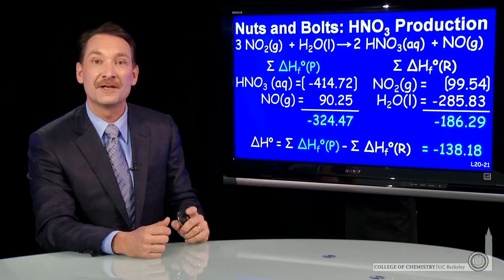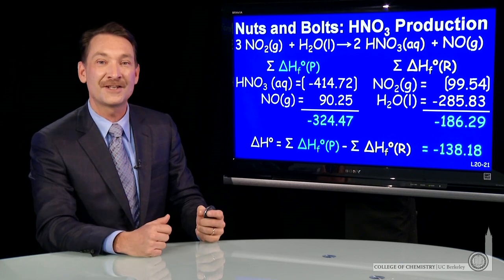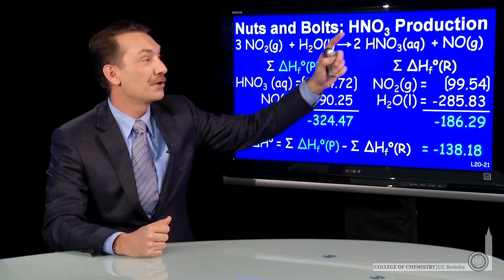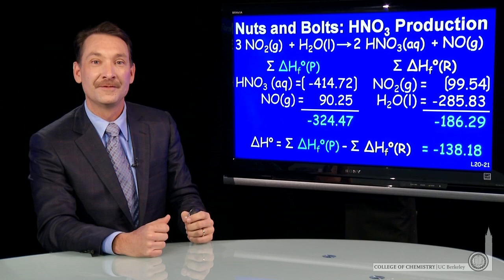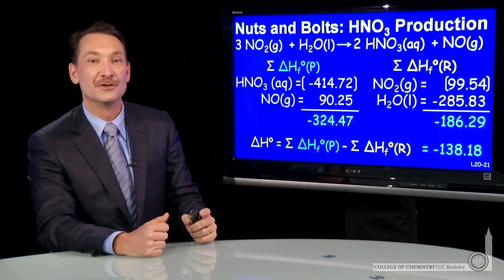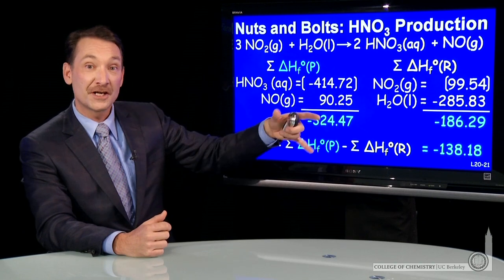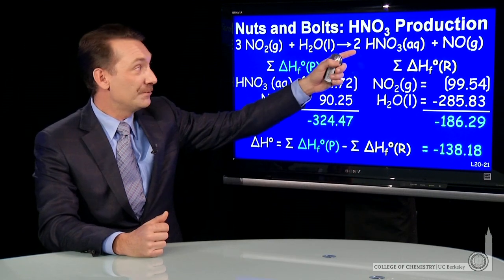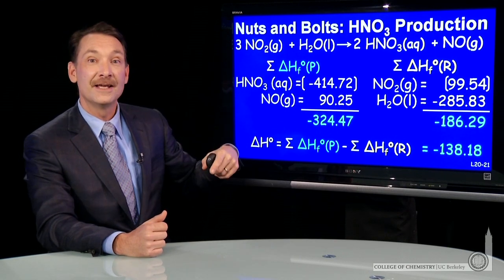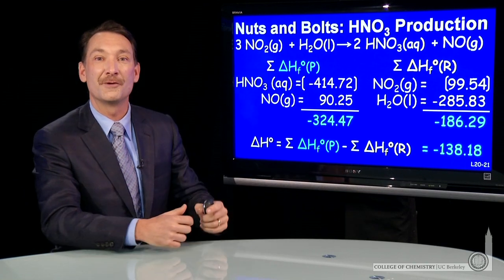So when this reaction occurs according to this stoichiometry, 138 kilojoules are released — it's an exothermic reaction, negative on the enthalpy scale. That corresponds to the production of two moles of nitric acid. If only one mole were produced, that would be half this enthalpy, or approximately 70 kilojoules. So keep track of your stoichiometric coefficients, and you'll be able to calculate enthalpies of any chemical reaction from the enthalpies of formation of the products and reactants.